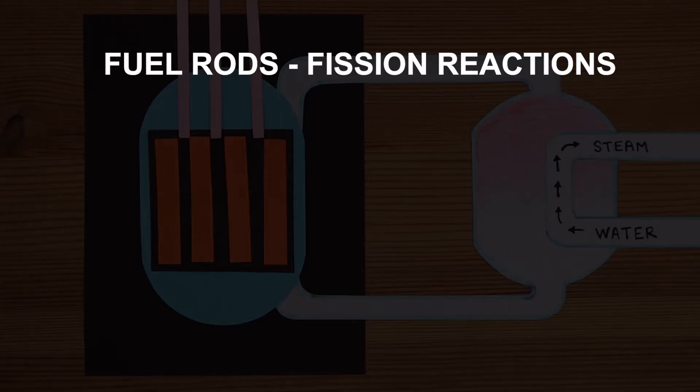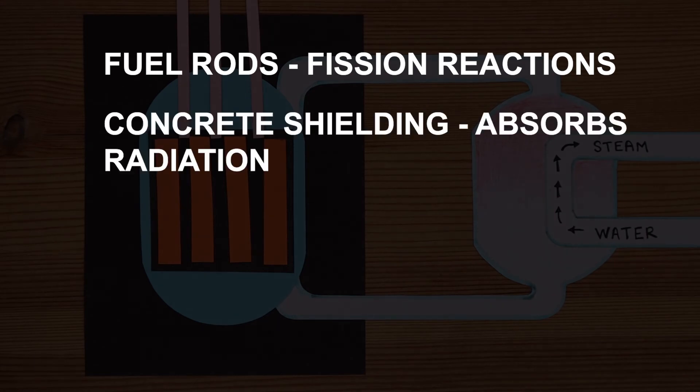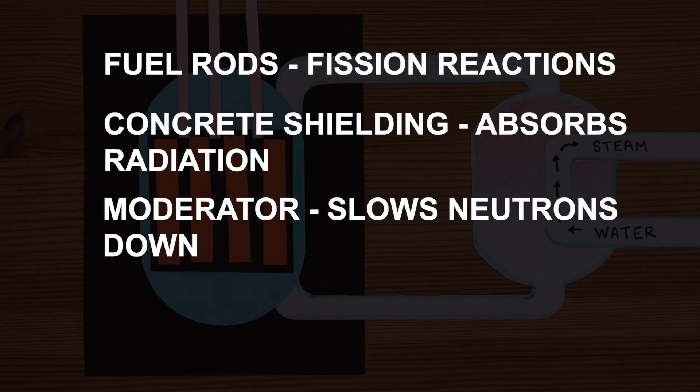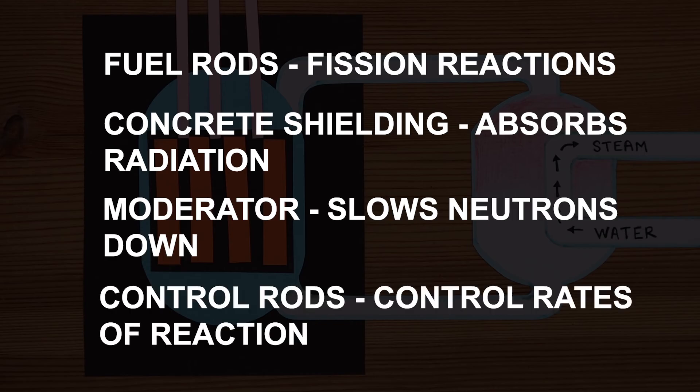To summarize, fuel rods are where fission reactions take place. The concrete shielding prevents radiation from leaving the reactor. The moderator slows neutrons down so that they can easily be absorbed by fuel rods. When the rate of reaction is too high, the control rods are lowered into the reactor to absorb excess neutrons.